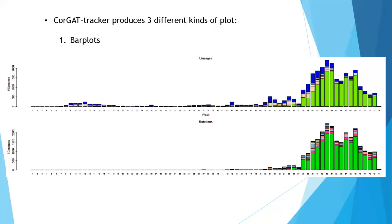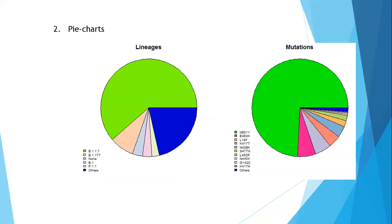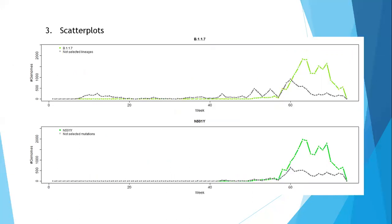CorgatTracker produces three different kinds of plots. More in detail, we have a set of bar plots representing the number of occurrences of lineages and mutations on a weekly basis. Then we have a set of pie charts showing the cumulative prevalence of SARS-CoV-2 lineages and mutations. And last but not least, we have a set of scatter plots representing the number of weekly occurrences for a user-selected lineage or mutation.